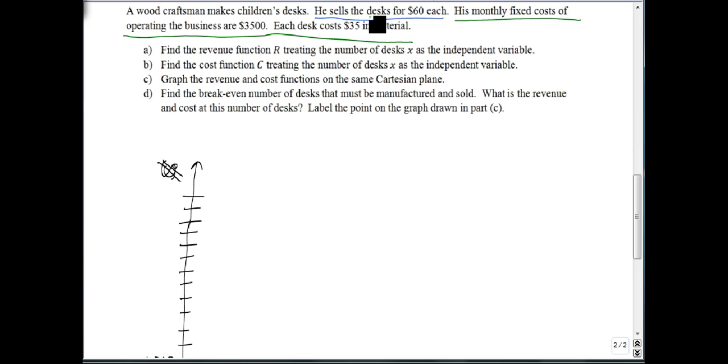So the blue is our revenue, that's how much we make, and our C is our cost, how much it charges. Our revenue is easy. If we sell x desks, we make $60 a desk. However, our cost function is a little more complicated than that. It costs us $35 per desk, and we have to spend $3,500 just on getting enough to make sure it works out.